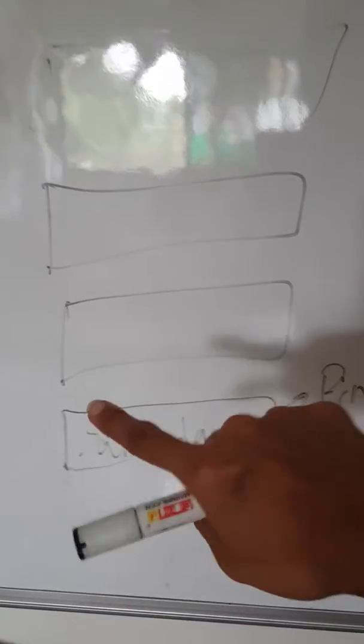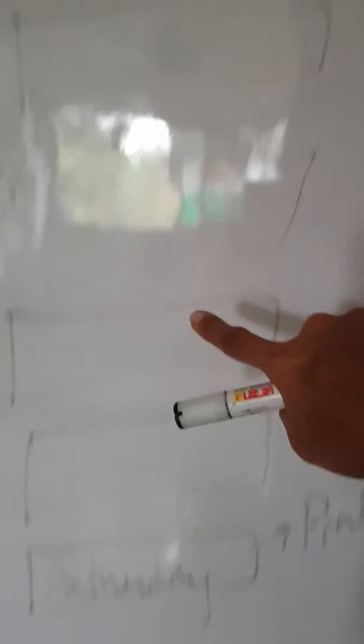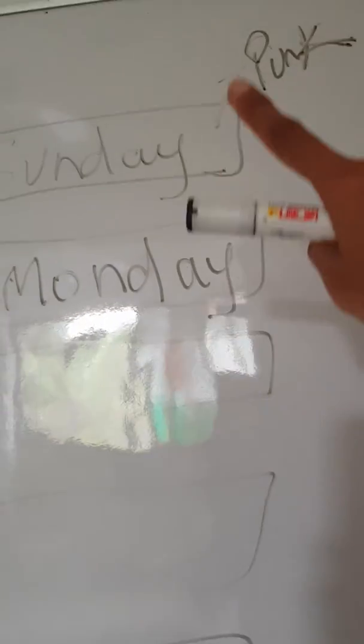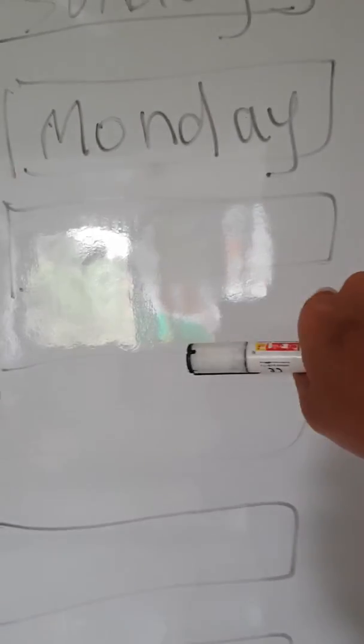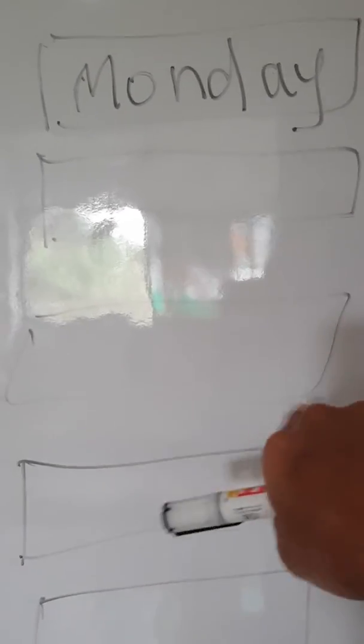This is weekend, and this is weekend. A pink colored chart paper. And in between you write Monday, Tuesday, Wednesday, Thursday, Friday.